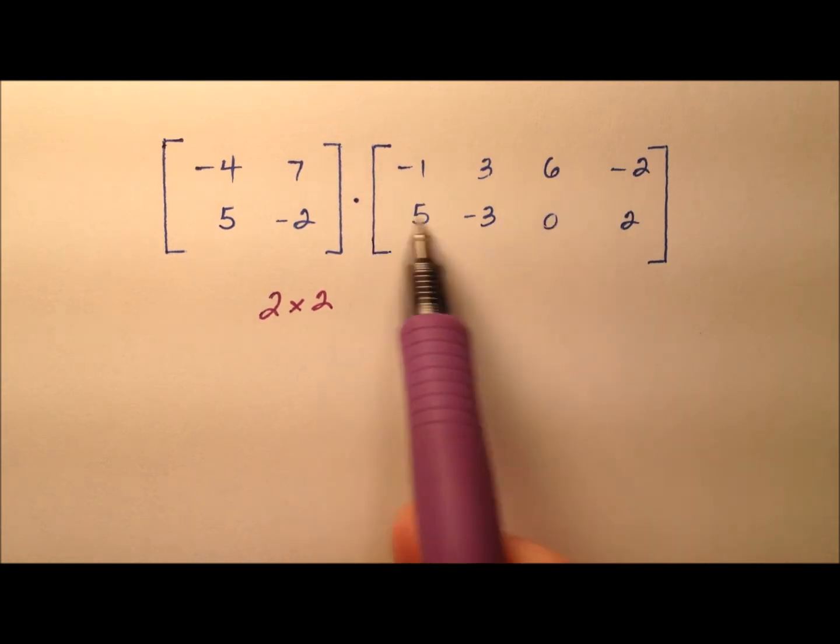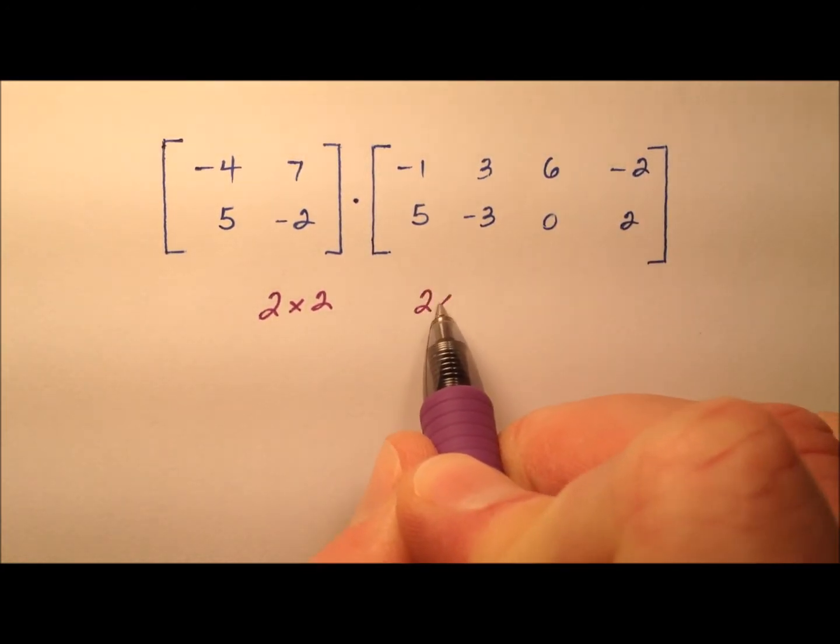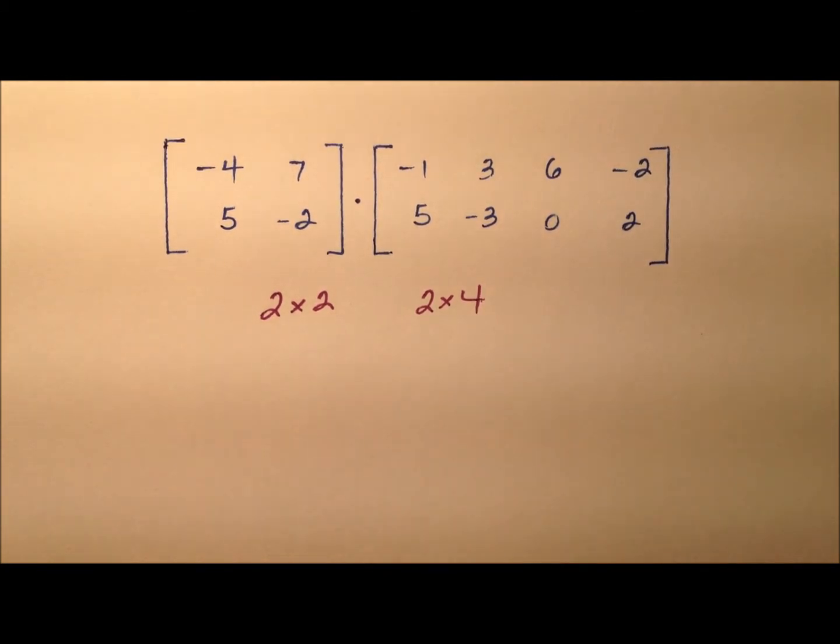In the second matrix, 2 rows and 4 columns, so this is a 2 by 4. So remember, in order for the matrix multiplication to be defined, these inner dimensions, or the number of columns here and the number of rows here, must be the same, and in fact they are, they're both 2.